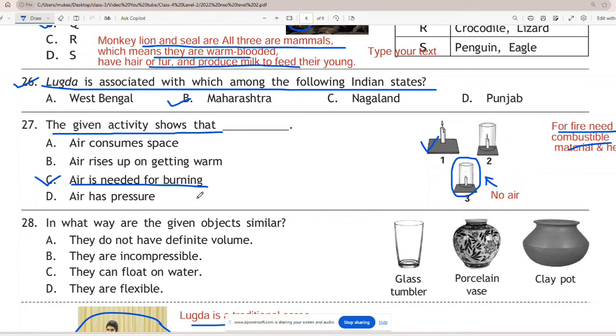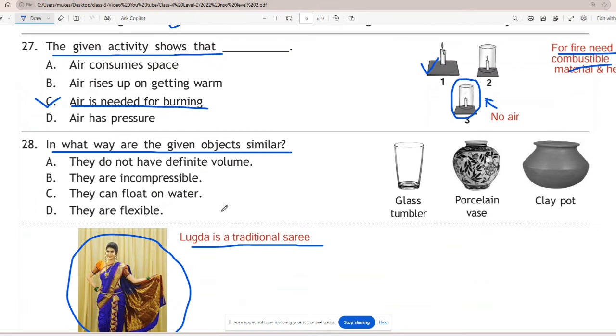Question 28: In what way are the given objects similar? Correct answer is B. All three given objects - glass, porcelain vase, and clay pot - are incompressible. Other options are incorrect like all three have definite volume and they can't float over water, and they are not flexible.